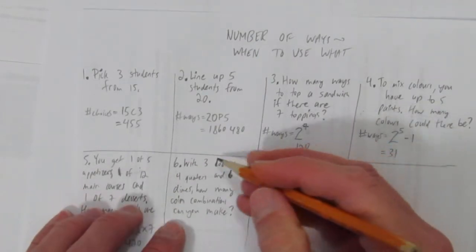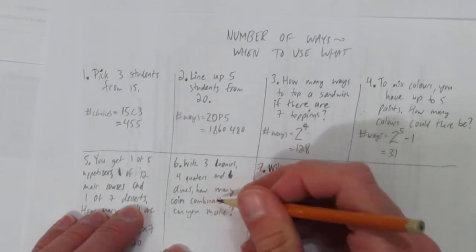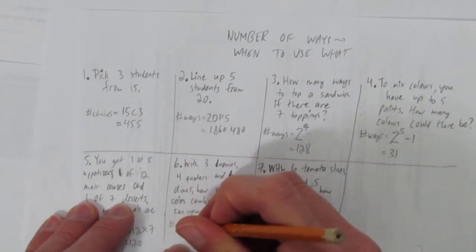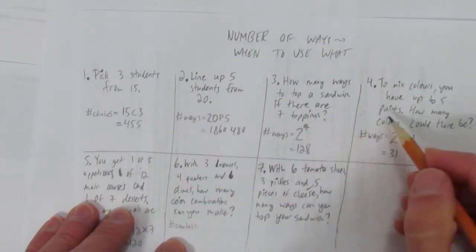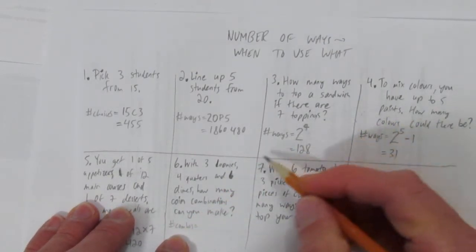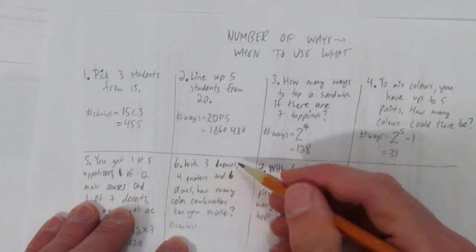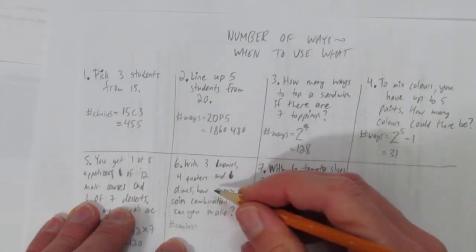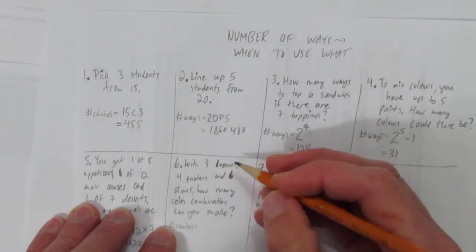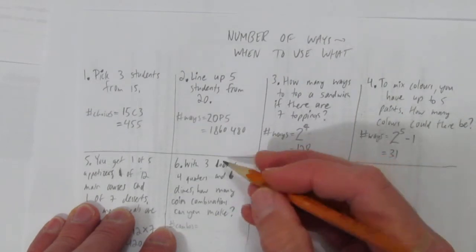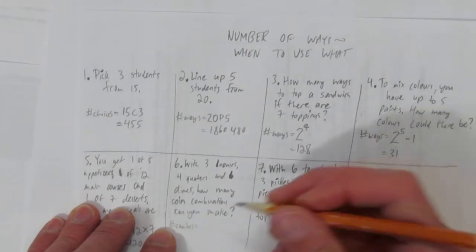Number six: you have three loonies, four quarters, and six dimes. How many coin combinations can you make? In this case, the number of combos, unlike questions three and four, is similar except the loonies repeat. We're going to assume one loonie is identical to another or indistinguishable. Obviously, you can tell loonies apart if they have different years or are discolored or scratched, but we're going to assume they're the same. They act like the same object.